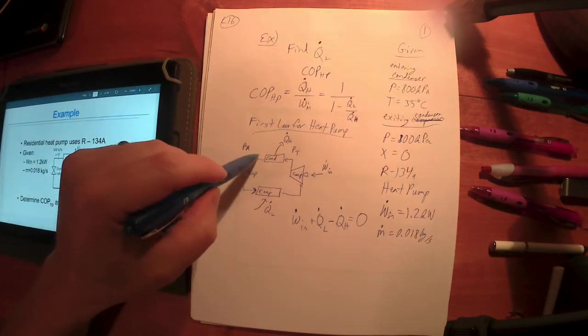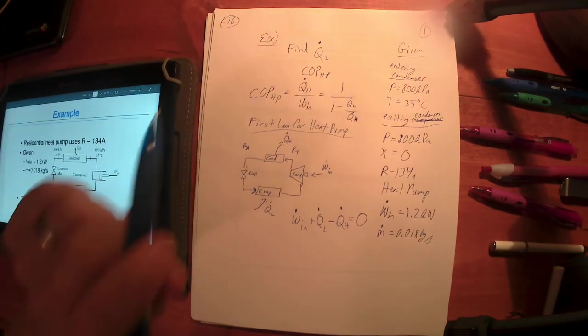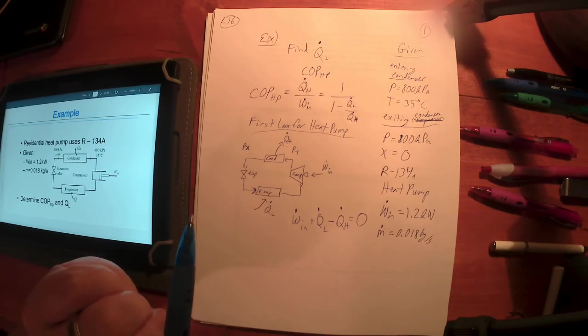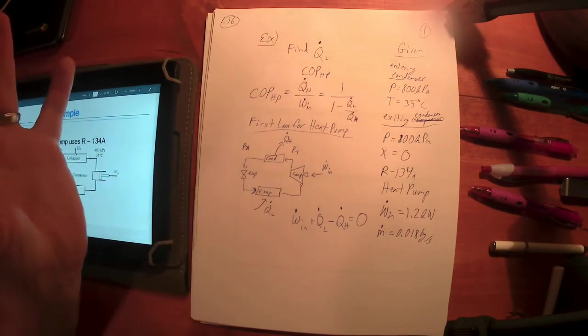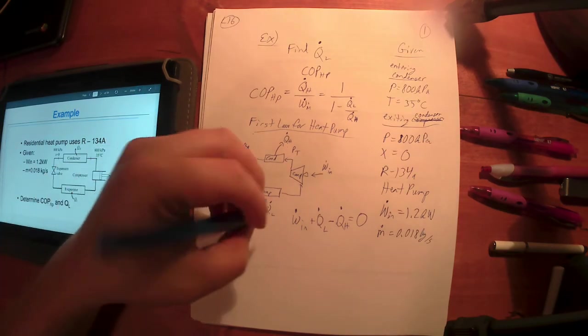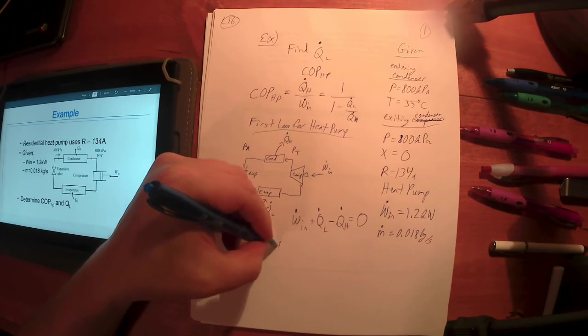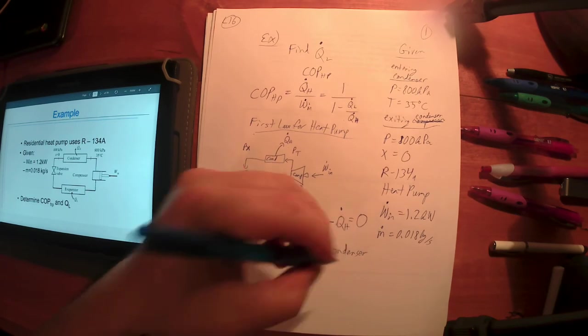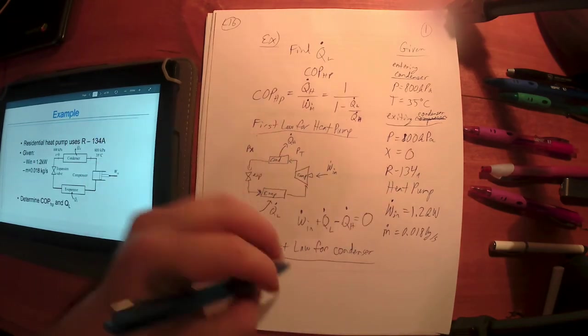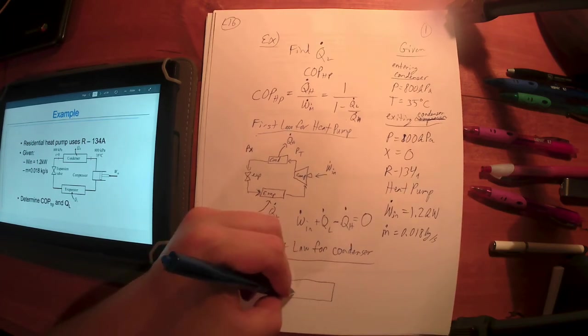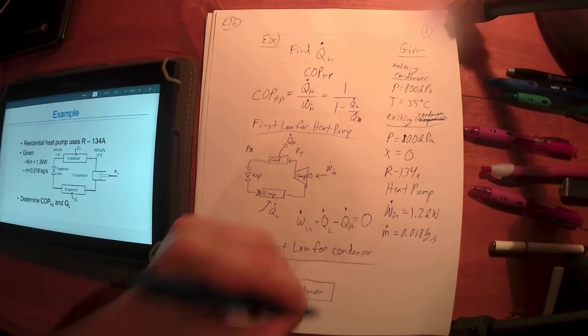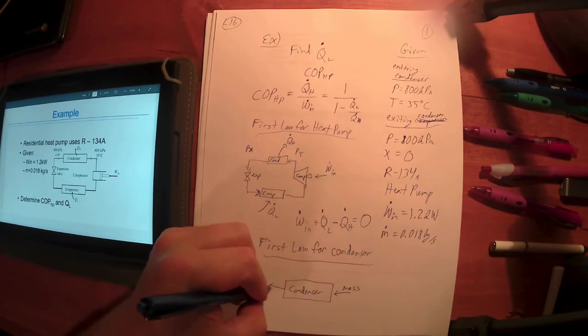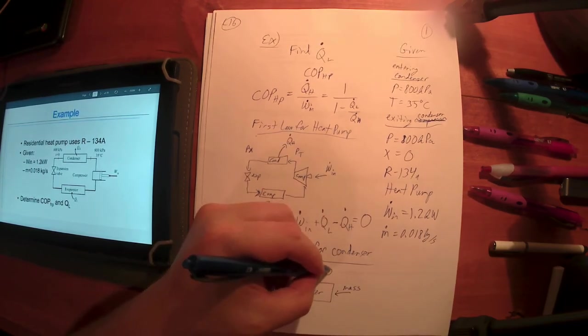Pause and go look up what is a system. You know what a system is, right? One way to think of a system is anything you can draw a dotted line around, anything you can isolate from the surroundings. What if I draw a dotted line around my condenser? Just this guy. If I just look at the condenser, what crosses the boundary for the condenser? Mass. Q dot H.